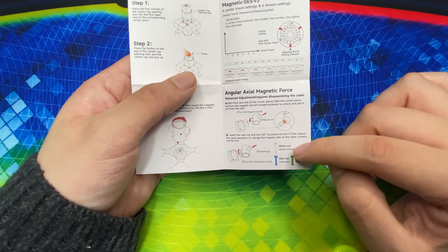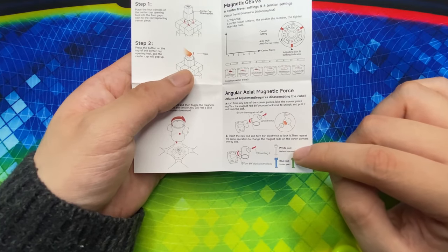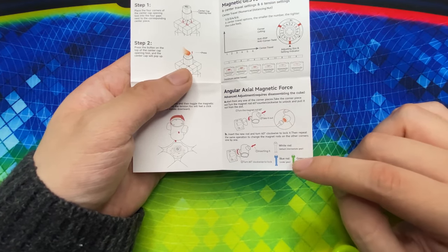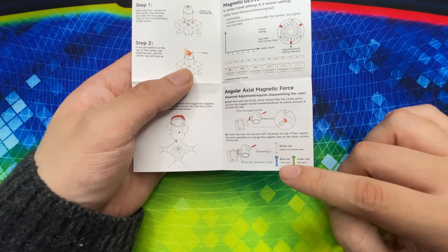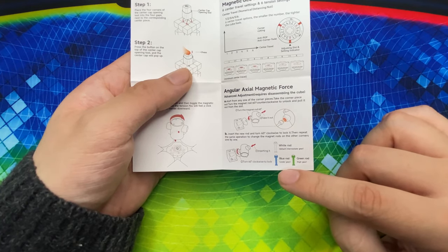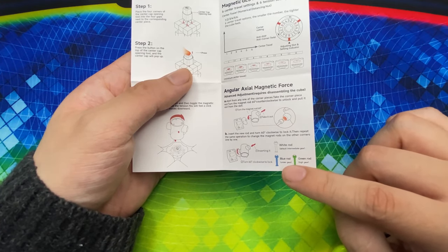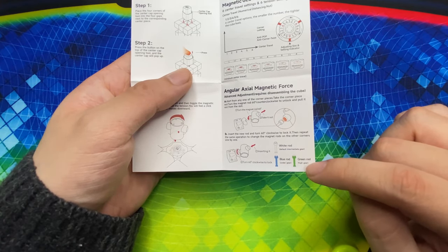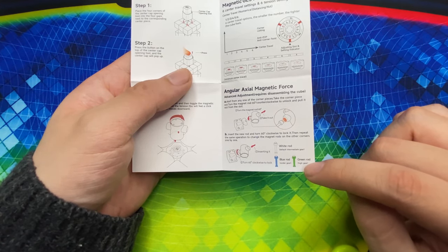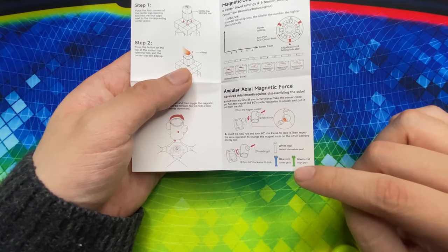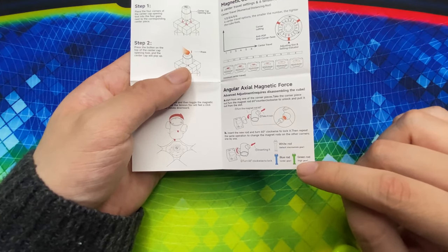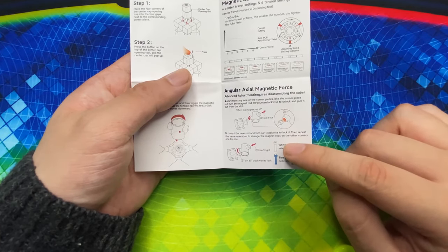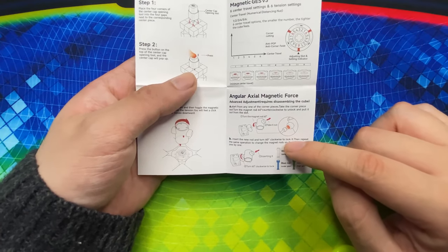Y acá podemos ver que la patita blanca es la default es la que viene de clásica. El azul es este under o sea más lejos al parecer, y la verde es este más cercana al core según tengo entendido high, supongo que es, ah no high está más alto entonces esta es la más débil y el azul es el imán más fuerte y el blanco es el estándar el que viene ahí insertado.